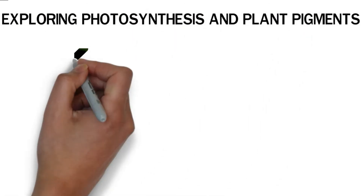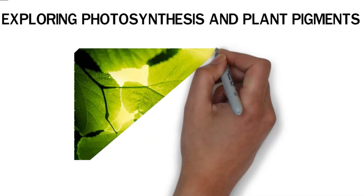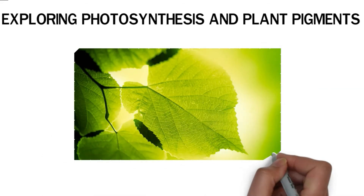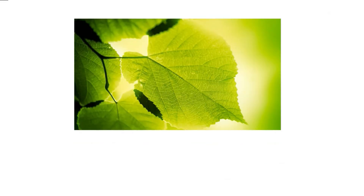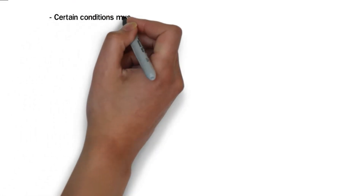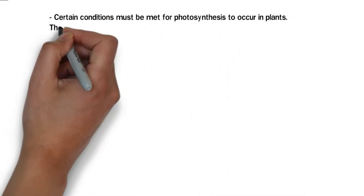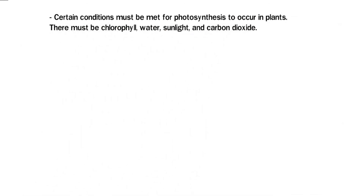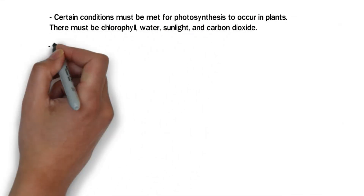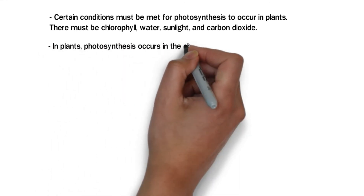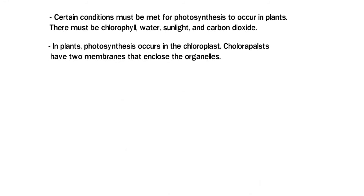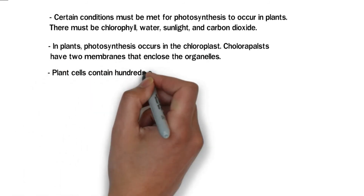Photosynthesis is the process through which green plants and phytoplankton make their own food by transforming light energy into chemical energy. Certain conditions must be met for photosynthesis to occur: plants must have chlorophyll, water, sunlight, and carbon dioxide. In plants, photosynthesis occurs in the chloroplasts, which have two membranes that enclose the organelles.